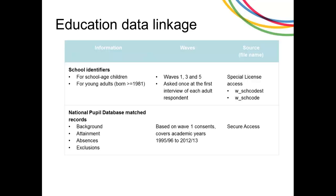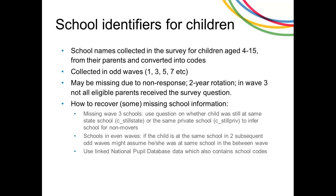Starting with school identifiers and administrative linkage at school level: we collect school names in the survey from parents of children aged 4 to 15. The parents provide the school name, and we immediately convert those into school codes during the interview using a lookup table. School names are collected in all odd waves — waves 1, 3, 5, and so on. There may be some missing information: parents might not respond, data is only on a two-year rotation so there are no responses in even waves.